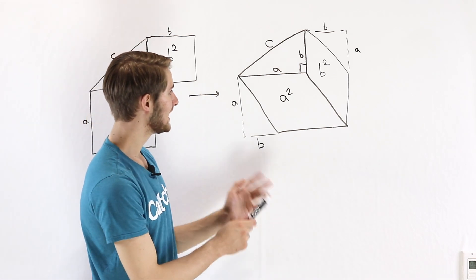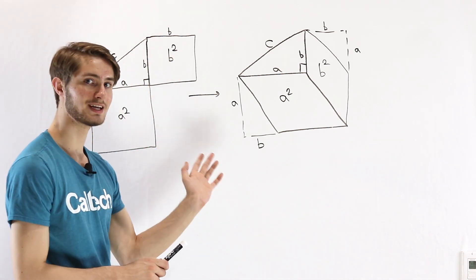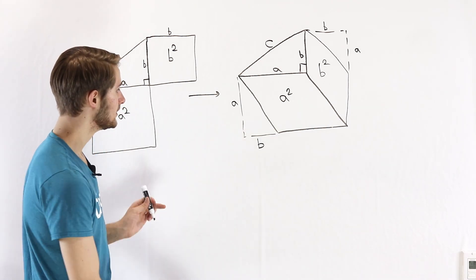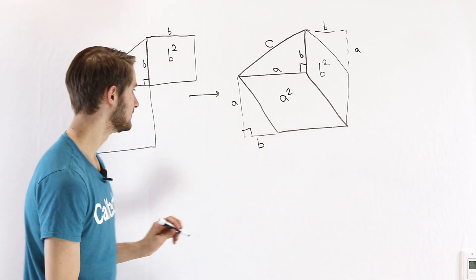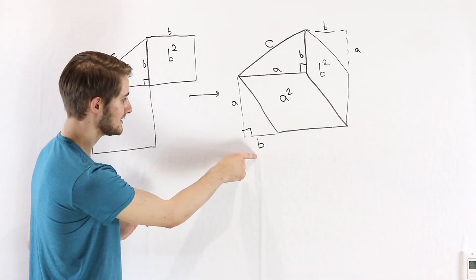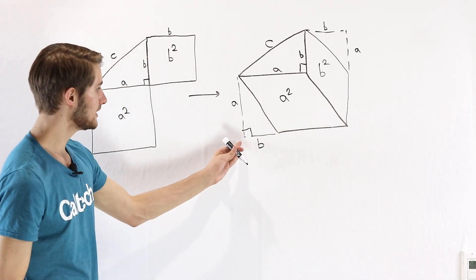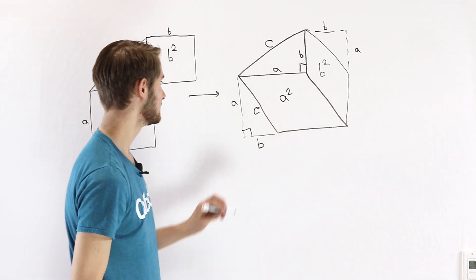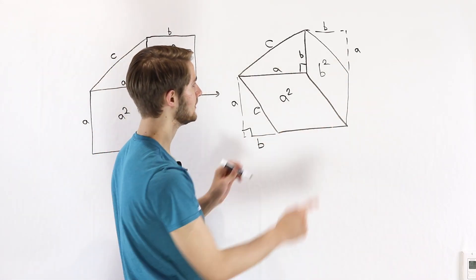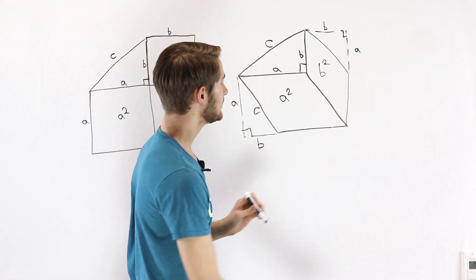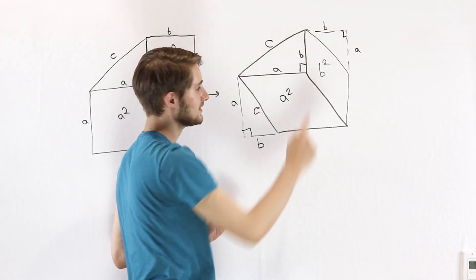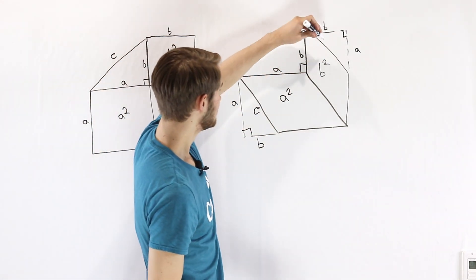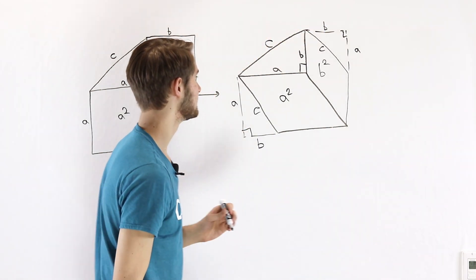This diagram is accurate, and we want to think about how we can get some information out of it. Notice on the bottom left we have a right angle, and then a side a and a side b. That means this right triangle is the same as the one we see up here, so this length is going to be c. The same thing is going on up here: we have a right angle, a side length of a, and a side length of b, which means this right triangle is congruent to that one as well, giving a side length of c.